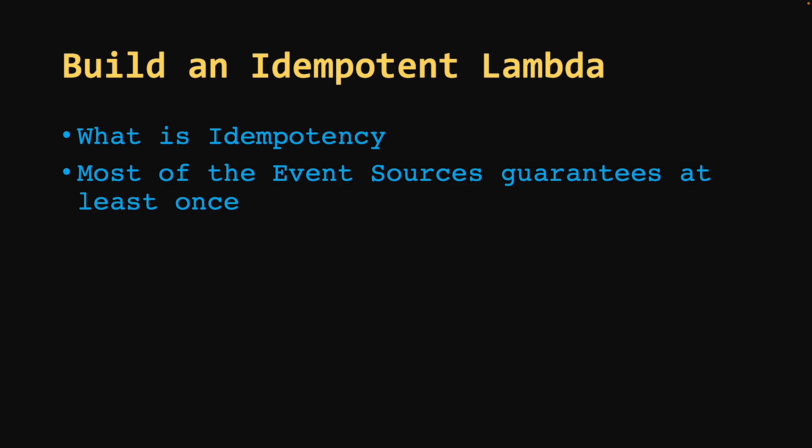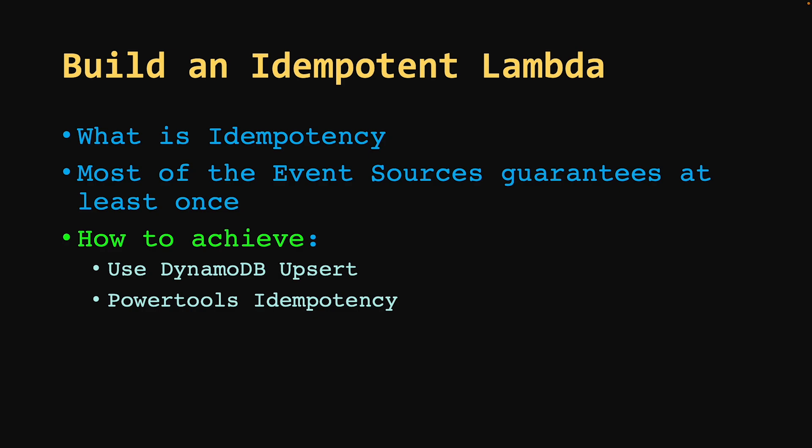How can you achieve idempotency? You might have to tweak your logic. For example, if you're using databases, you can use UPSERT operations. DynamoDB already has an UPSERT API operation. Apart from that, if you are aware of the AWS PowerTools library, that gives you an idempotency feature — you can explore that. I'll give the link in the description below.